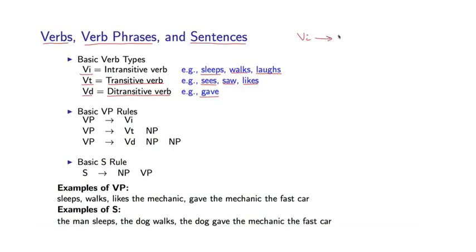For example, VI can go to sleeps, might be one rule in the grammar. Or VI goes to walks. We would have VT goes to sees, and similar entries for saw and likes. And we would have VD goes to gave, for example.